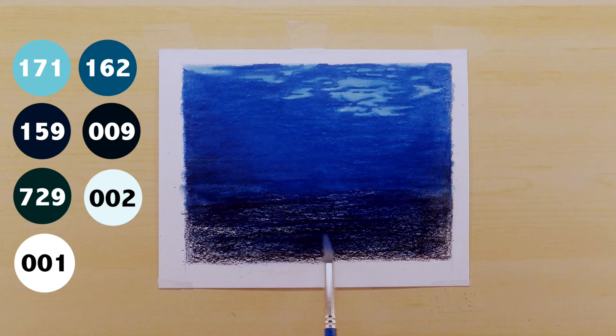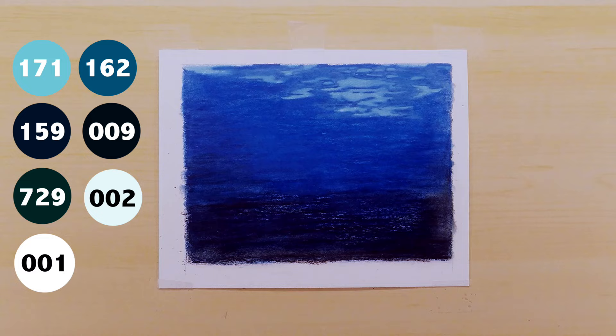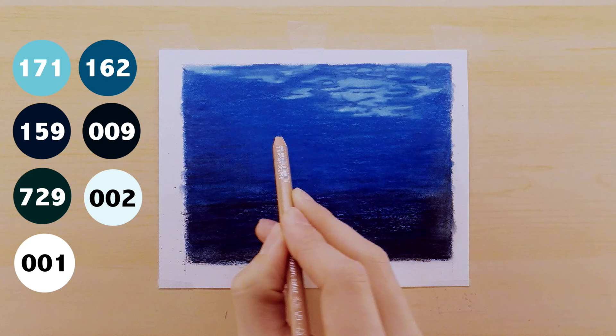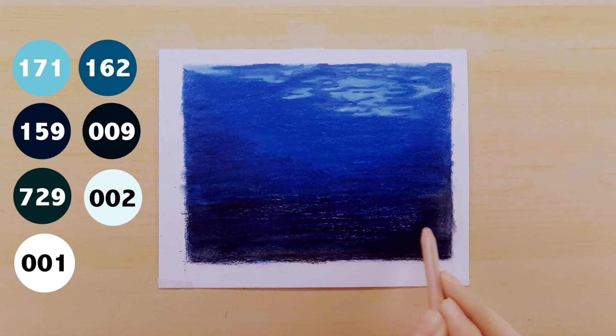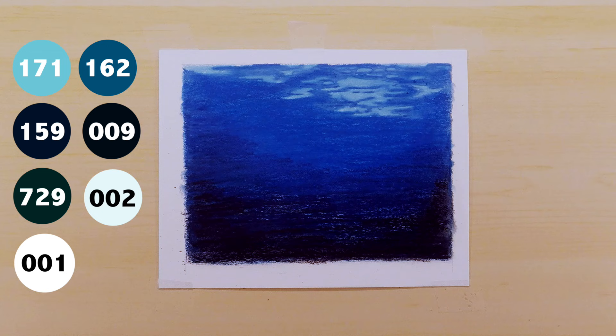After I blend it out, I switch back to my 171 pencil just to boost the highlights a little bit in the top and then I also use my 162 to kind of help build the contrast a bit more. After that I switch to the 159, which is a really dark blue not black, and just kind of reinforce the gradient from the top to the bottom of the page.